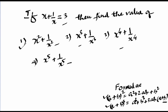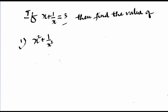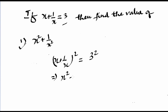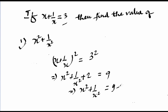First, let us take x square plus 1 by x square. As it is given that x plus 1 by x is equal to 3, we will square both sides: (x + 1/x)² = 3² = 9. After squaring we get x² + 1/x² + 2·(x · 1/x) = 9. Since x and 1/x cancel, the 2ab term becomes 2. So x square plus 1 by x square equals 9 minus 2, which is 7.